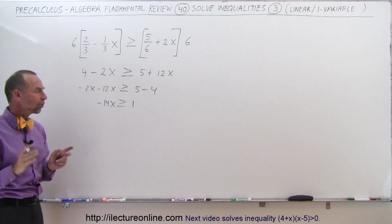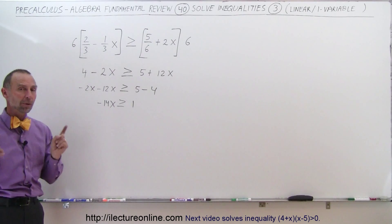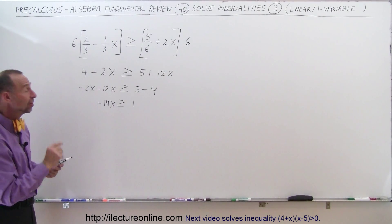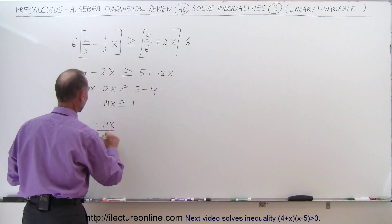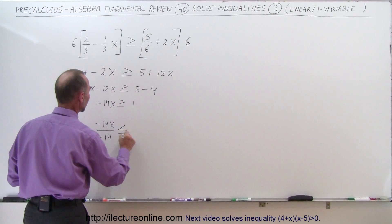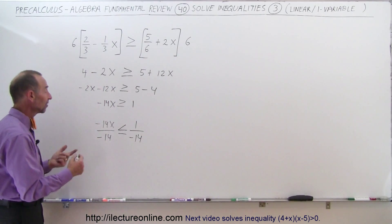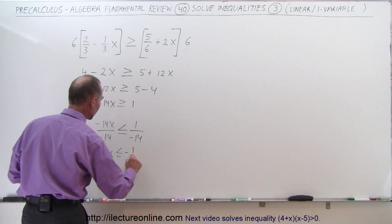And now we have to divide both sides by the negative 14, the coefficient in front of x. But remember, when we multiply both sides of inequality by a negative number, we have to flip the inequality symbol around. So this becomes minus 14x divided by minus 14, and instead of greater than or equal to, we say less than or equal to 1 divided by minus 14. Always remember to do that.